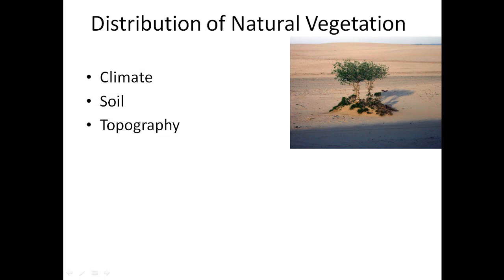Climate: India is a vast country, so the climatic condition of northern India will vary from that of peninsular India, and this determines the quality and type of vegetation. Followed by climate is soil. Different types of soils support different types of vegetative cover — for example, in the desert region it will vary and in the deltaic region it will vary.